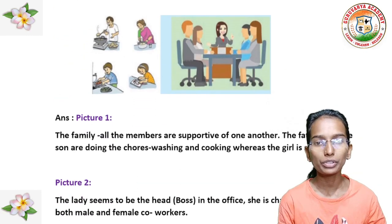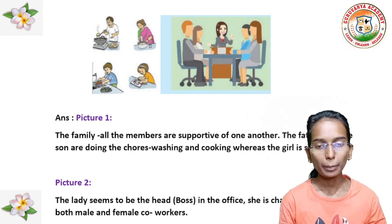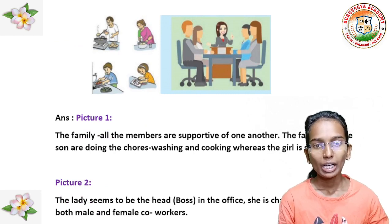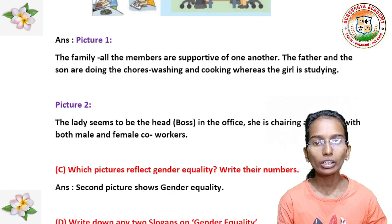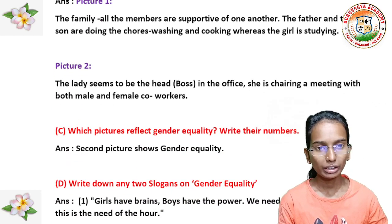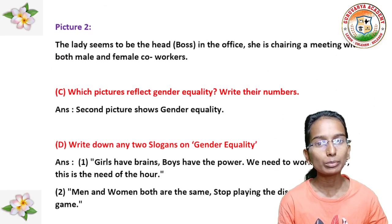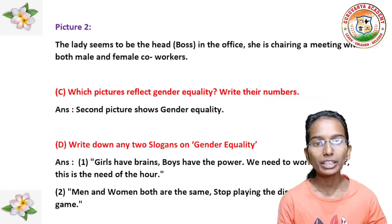Here we have given two pictures, you can observe them now. In picture one, all the family members are supportive of one another — the father and the son are doing the chores, washing and cooking, whereas the girl is studying. In picture two, the lady seems to be the head or boss in the office, and she is sharing a meeting with both male and female co-workers.